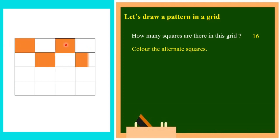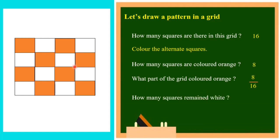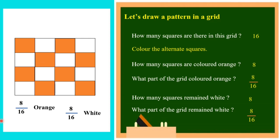Start coloring: 1, 2, 3, 4, 5, 6, 7, 8. How many squares are colored orange? Counting 2, 4, 6, 8 — totally 8 squares are colored orange. What part of the grid is colored orange? Totally 16 squares, out of 16 squares only 8 are colored orange, so 8 by 16. How many squares remain white? If totally 16 squares and 8 are colored, then 8 remain white — so 8 by 16. So 8 by 16 orange and 8 by 16 white. This is also a beautiful pattern in the grid.